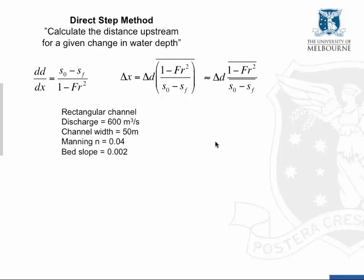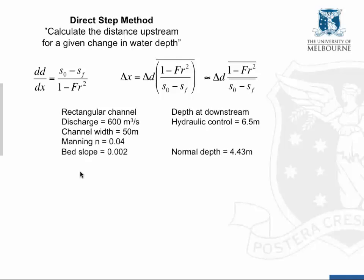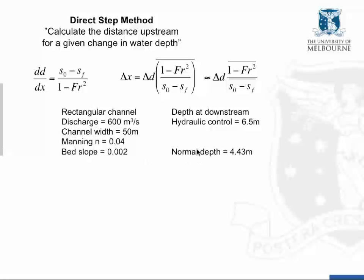Now let's look at a sample problem: a rectangular channel with a discharge of 600 cubic meters per second. The channel width is 50 meters, Manning's n is 0.04, and the bed slope is 0.002. We know the depth of the downstream hydraulic control is 6.5 meters — perhaps overtopping a weir. Using Manning's equation, we calculate the normal depth to be 4.43 meters.